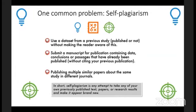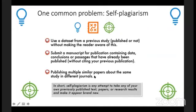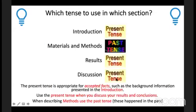Lots of authors get in trouble thinking 'I published that figure — it belongs to me, I can use it again.' You can, but you need to cite the previous work, and if published in a traditional journal, you probably need permission from the copyright holder — because you've likely signed over the image rights to the publisher. Open access publishing lets you retain copyright, but you still always need to cite your previous work.